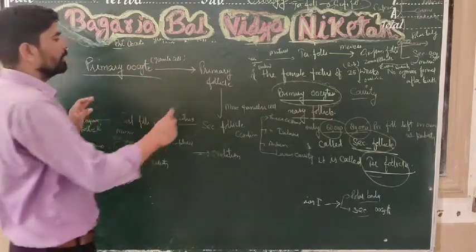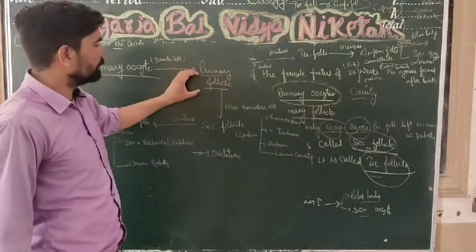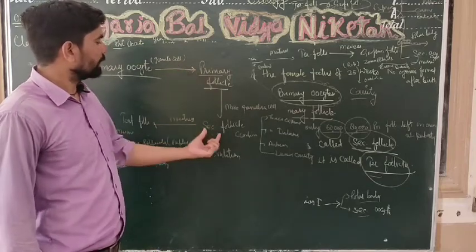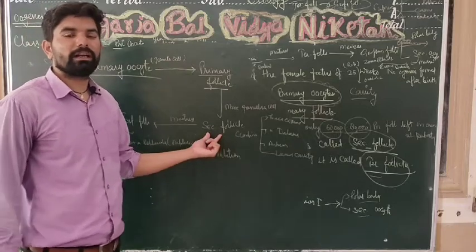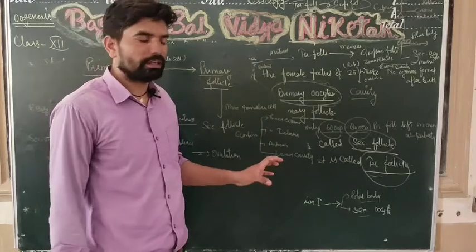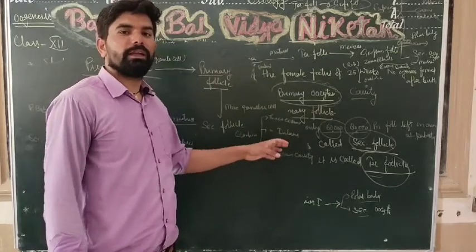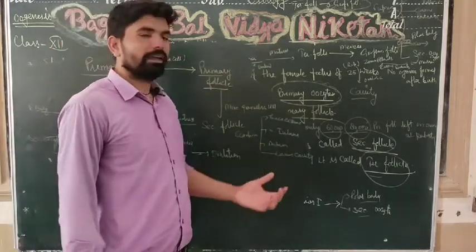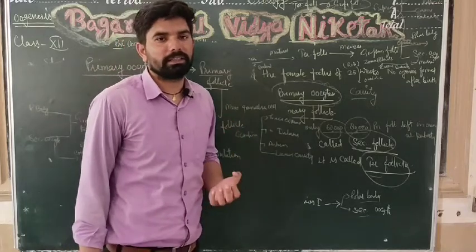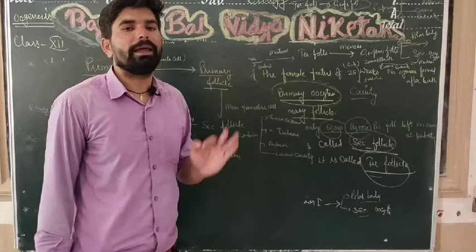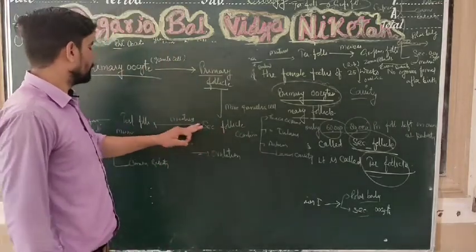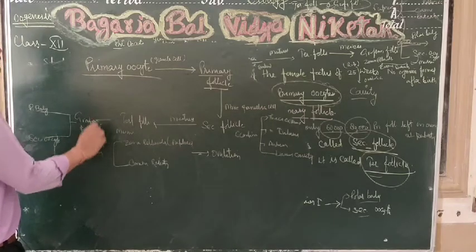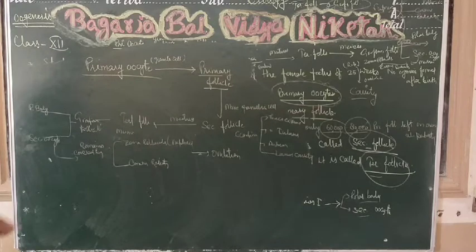In the diagram: oogonia form primary follicles. Primary follicles get more granulosa cell coverage to become secondary follicles. Secondary follicles contain a theca that organizes the structure. These mature into tertiary follicles, which have a fluid-filled antrum. Meiosis in the tertiary follicle produces the Graafian follicle.